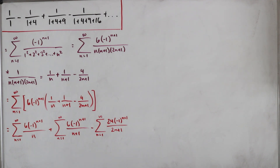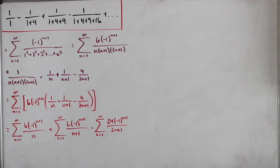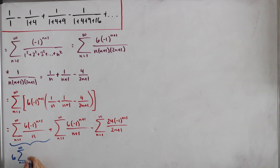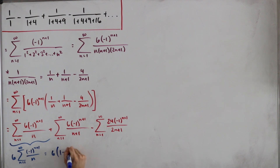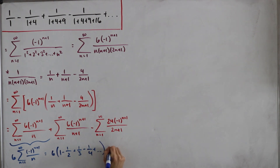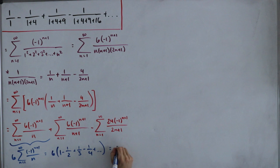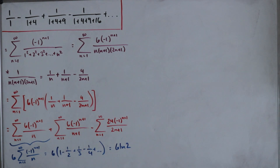We have three sums to calculate. Let's deal with the simpler ones first. For the first sum, we factor out 6 to get 6 times Σ (-1)^(n+1)/n. Expanding: 1 - 1/2 + 1/3 - 1/4 + ..., which is the alternating harmonic series. This has the well-known closed form ln(2), so the first sum evaluates to 6·ln(2).